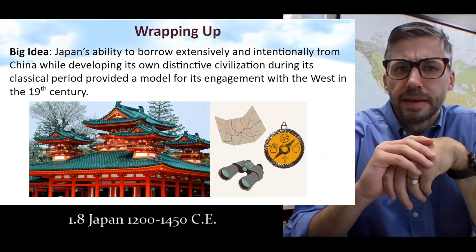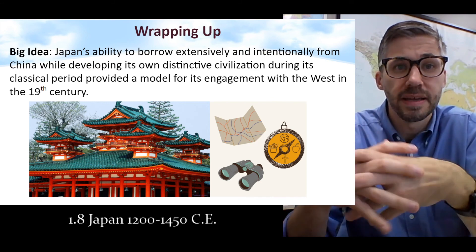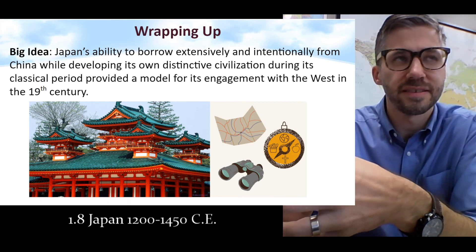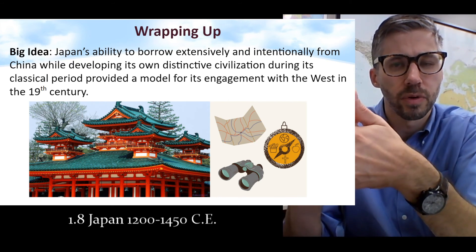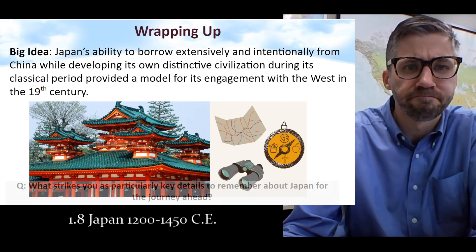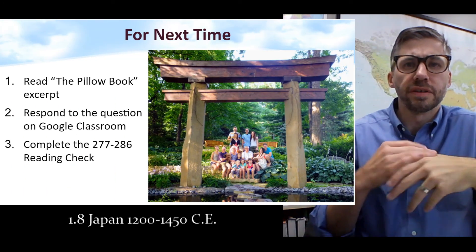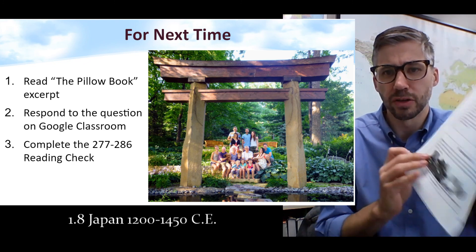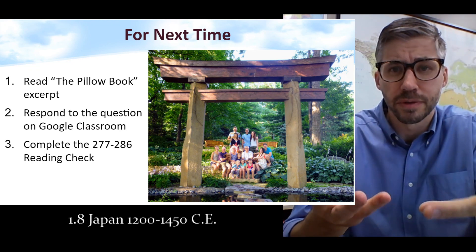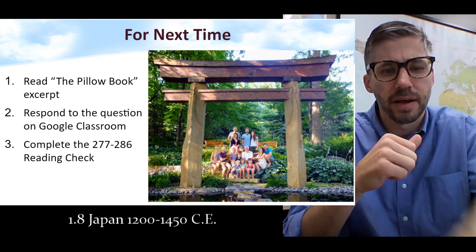As we wrap up, the big idea is Japan's ability to borrow from China and elsewhere extensively — sometimes intentionally — while also developing its own distinctive civilization. This will create an interesting model, and we'll see it circle back again later in our course when we get to the period from about 1750 to 1900, where Japan will do a similar thing with regard to the West. What strikes you from this lesson? What seems like a particularly key detail to remember about Japan? For the rest of our time on Monday, read the excerpt from the Pillow Book, respond to the reflection question on Google Classroom — there's a link in your learning plan — and there's a reading check for tomorrow where you'll review all this information. Great work. I look forward to seeing you in class tomorrow.